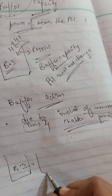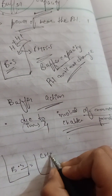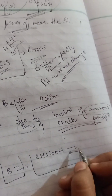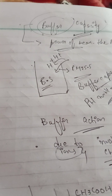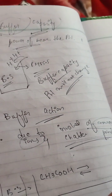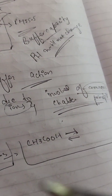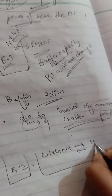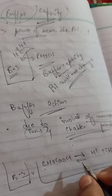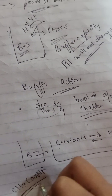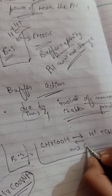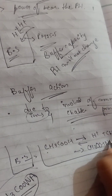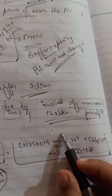For example, I have a buffer solution container. In it I have acetic acid, CH₃COOH, which is partially ionized because it is a weak electrolyte or weak acid. It partially ionizes into H⁺ and CH₃COO⁻. I have also added sodium acetate, CH₃COONa, which is fully ionized, giving CH₃COO⁻ and Na⁺.